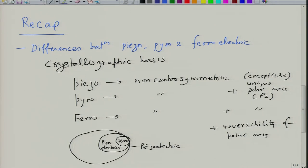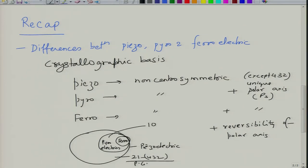Ferroelectrics is the most restrictive class of materials. Out of the 21 non-centrosymmetric point groups — 21 minus 432 — you have 10 pyroelectric point groups, and ferroelectrics are a subset of those. You can look at the Venn diagram where piezoelectric is the biggest class, some piezoelectrics are also pyroelectrics, and some pyroelectrics are ferroelectrics.